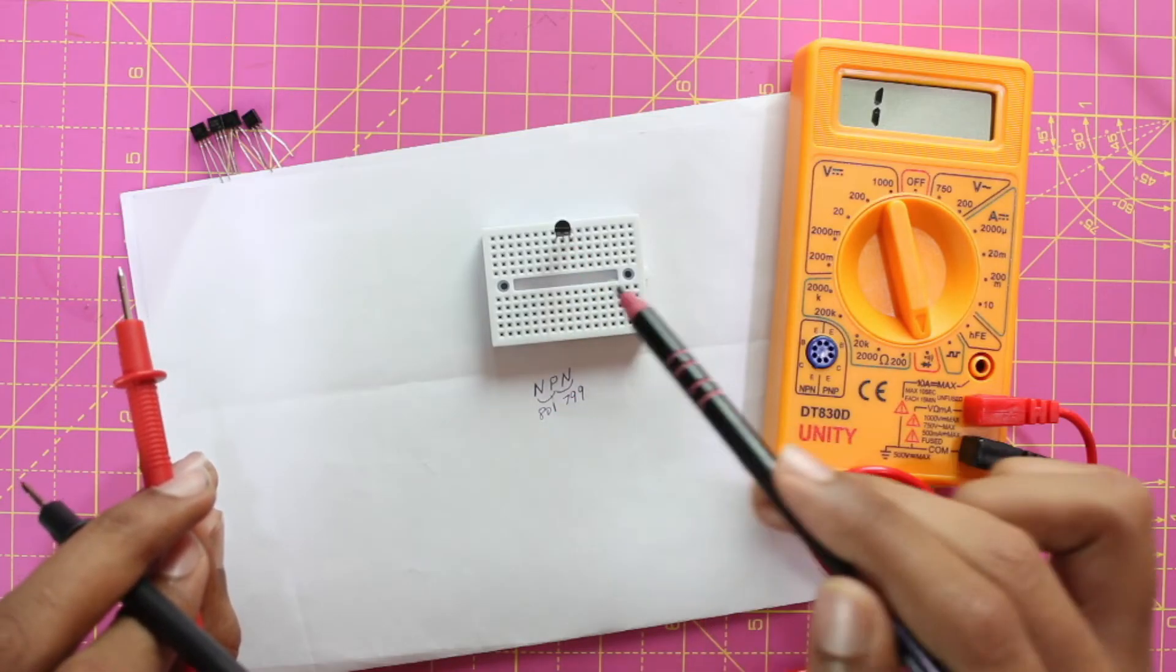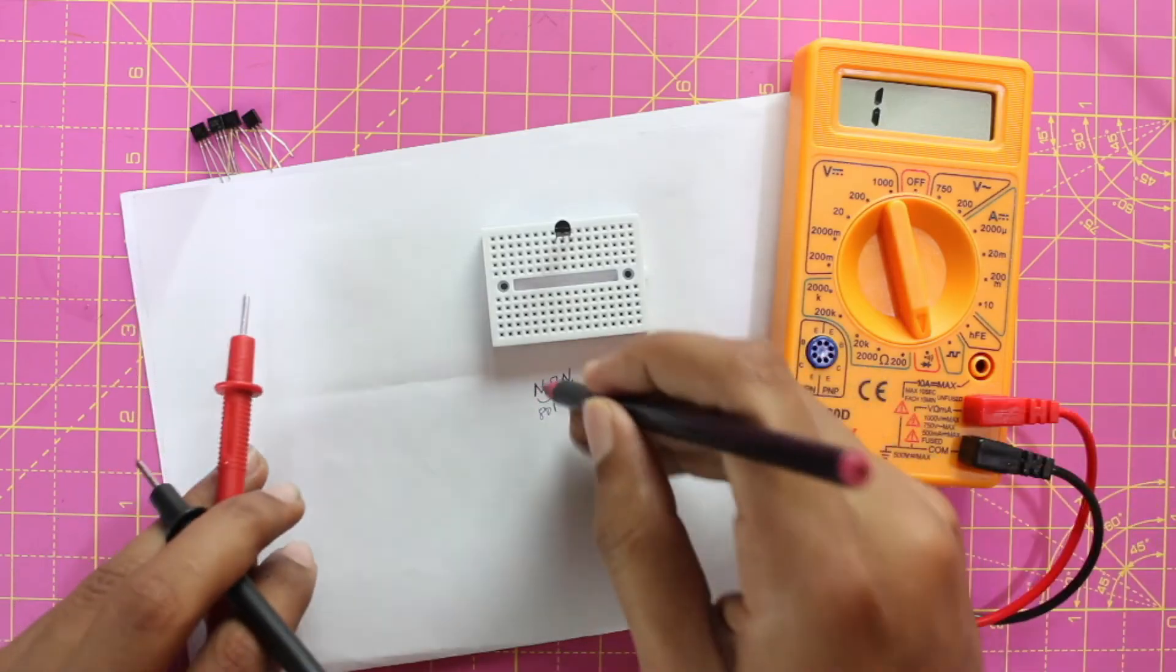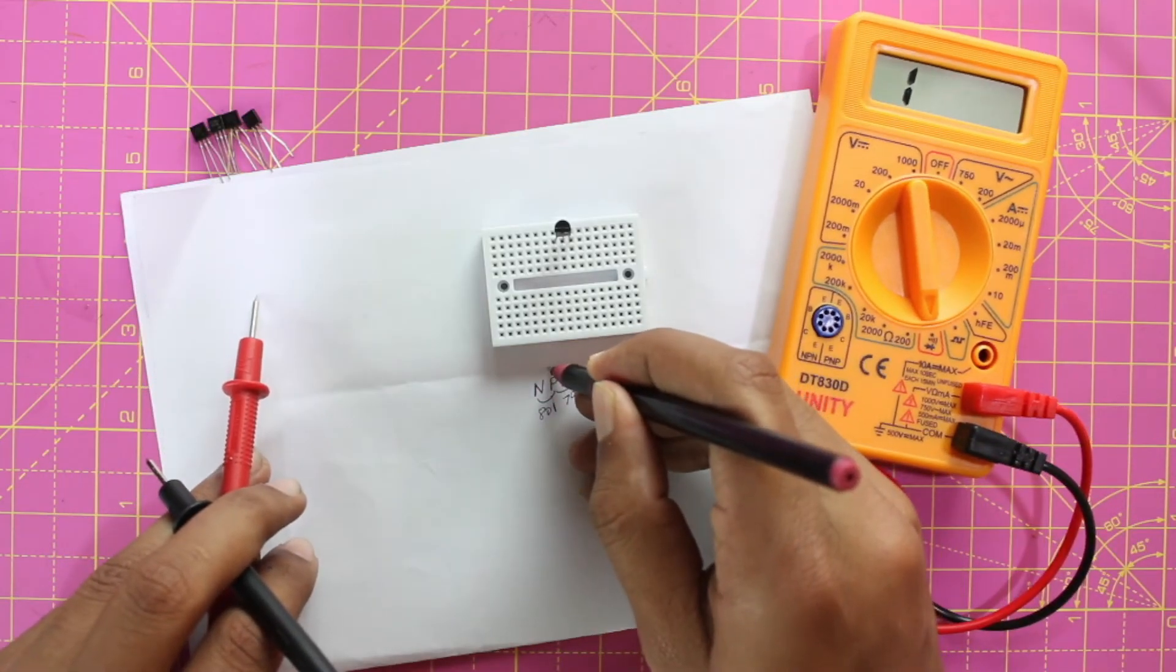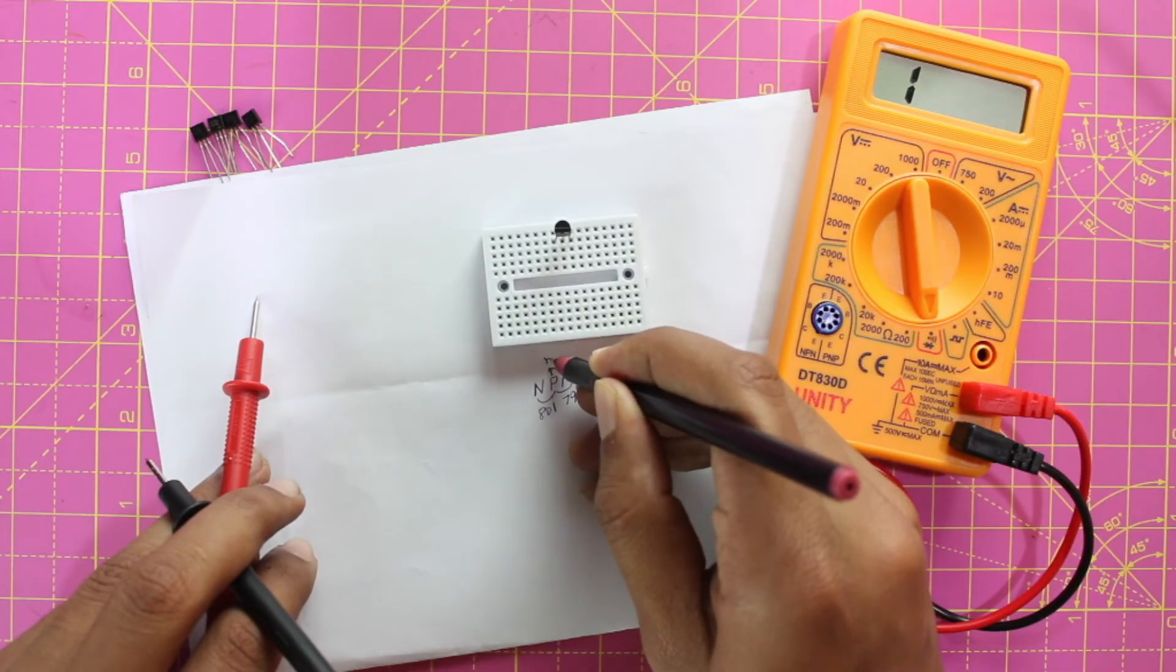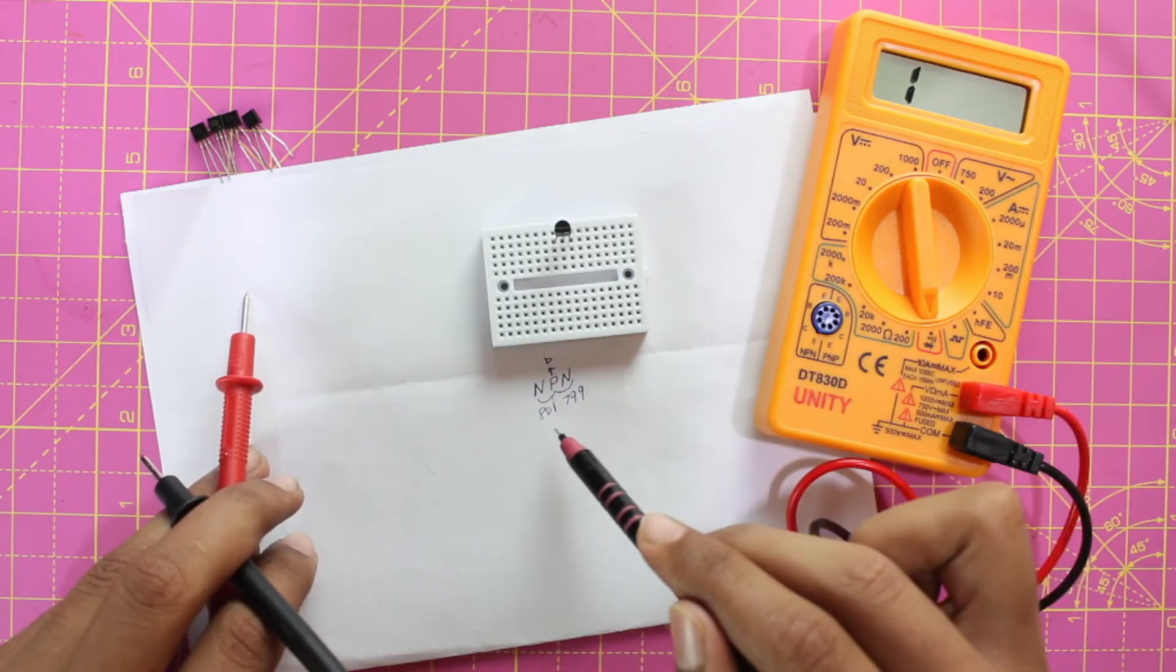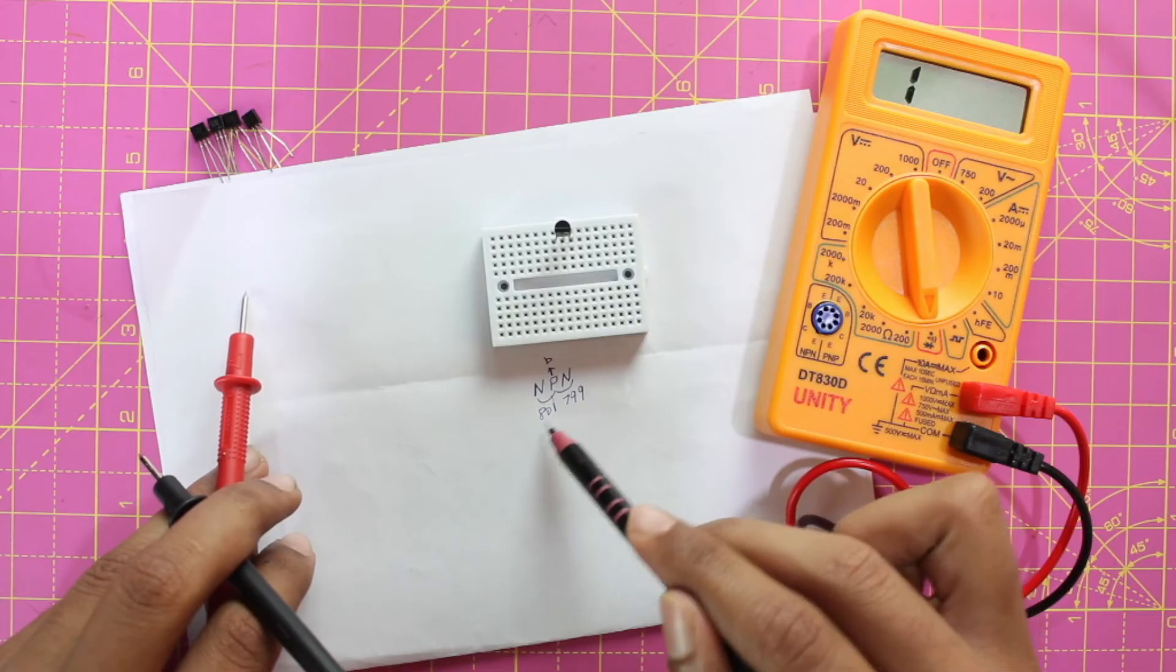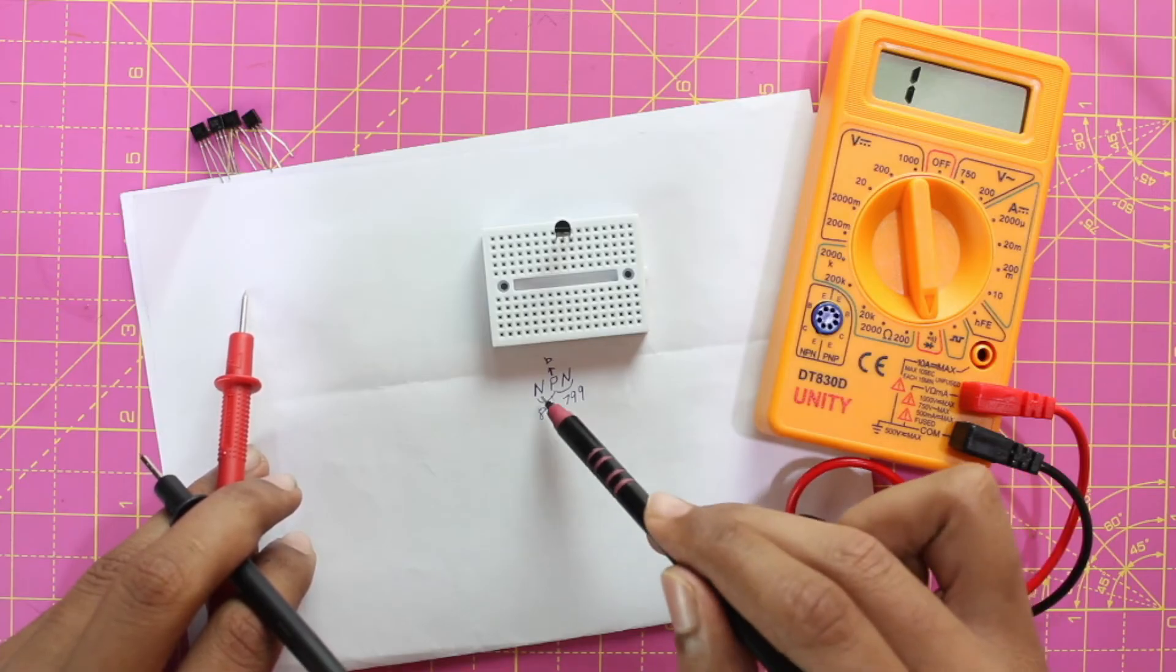Now we have to just figure out which is the emitter and which is the collector. The pin with the highest voltage drop will be the emitter. Now the first pin and the second pin had the highest voltage drop, so the first pin will be the emitter. Always remember this: the pin with the highest voltage drop will be the emitter.